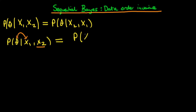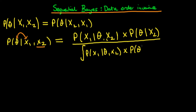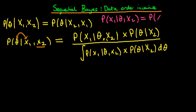This is just equal to the probability of x1 given theta and x2, times our prior — the probability of theta given x2 — all divided by the integral of the probability of x1 given theta and x2 times the probability of theta given x2, integrated over all potential values of theta. Now, if x1 and x2 are independent, then x2 doesn't convey any information about x1, so the conditioning on x2 disappears — this simplifies to the probability of x1 given theta. So we can get rid of the x2 dependence in both the numerator and denominator in terms of the likelihood, though not in terms of the prior.